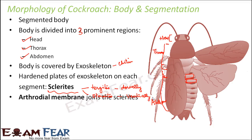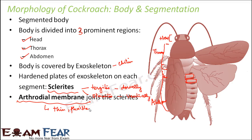The sclerites are joined together by an arthrodial membrane — a very thin and flexible membrane that connects the hardened plates of each segment. If there were no flexibility, the outer surface of the cockroach would be very hard and the animal would not be able to move at all. The flexibility is provided by the arthrodial membrane, while the sclerites themselves remain hard plates.